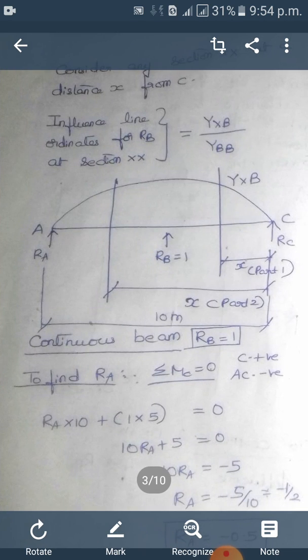We consider any section X-X at distance x from C. Before we do all this, there is Cournot's beam ABC. We have to first find the reactions.